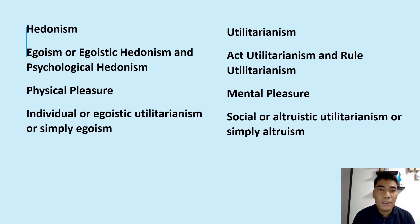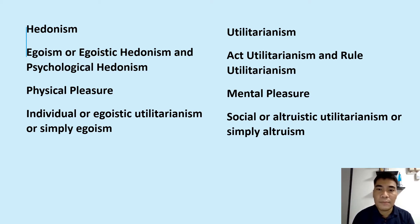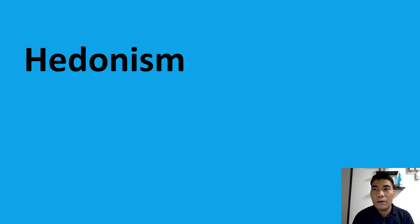These key words are found from one author to another, but the way I sum them up: hedonism has the same connotation as egoism, egoistic hedonism, psychological hedonism, physical pleasure, and individual egoistic utilitarianism or simply egoism. While utilitarianism covers act utilitarianism, rule utilitarianism, mental pleasure, and social or altruistic utilitarianism or simply altruism. Now we will go to them one by one.